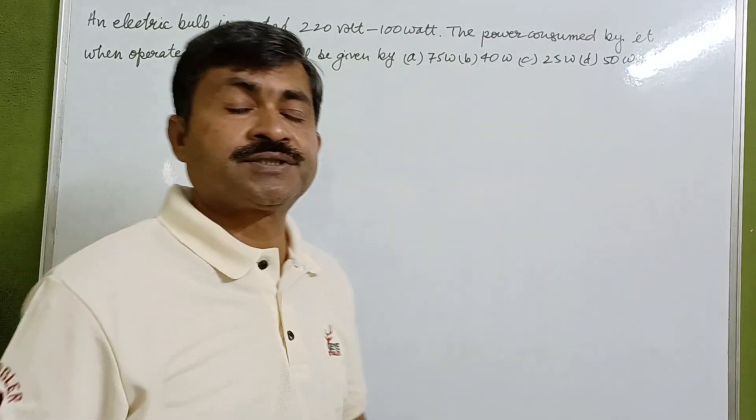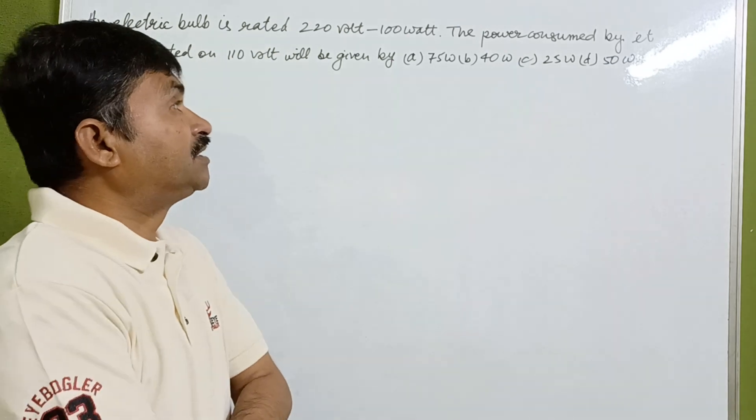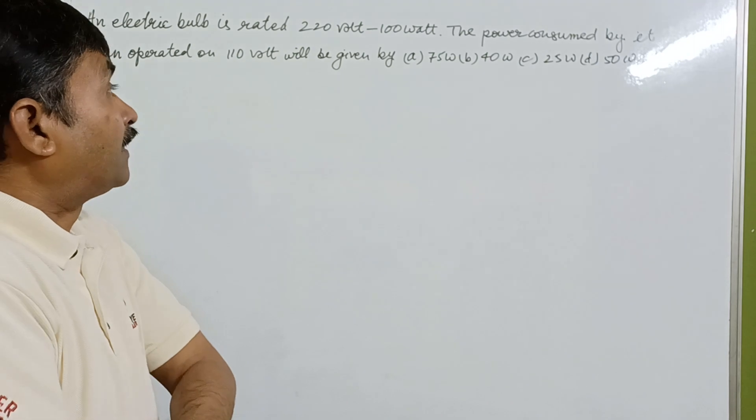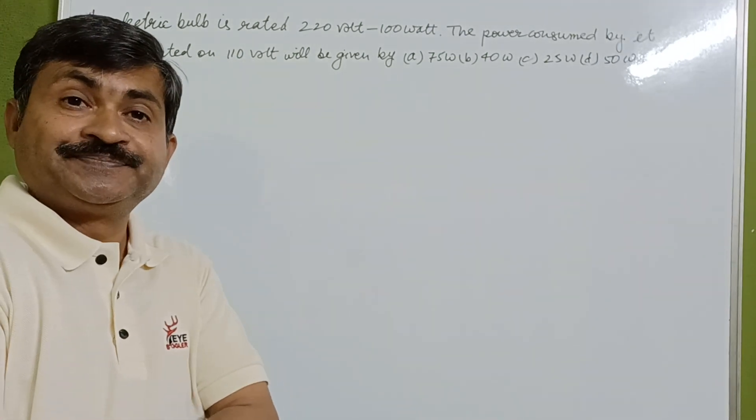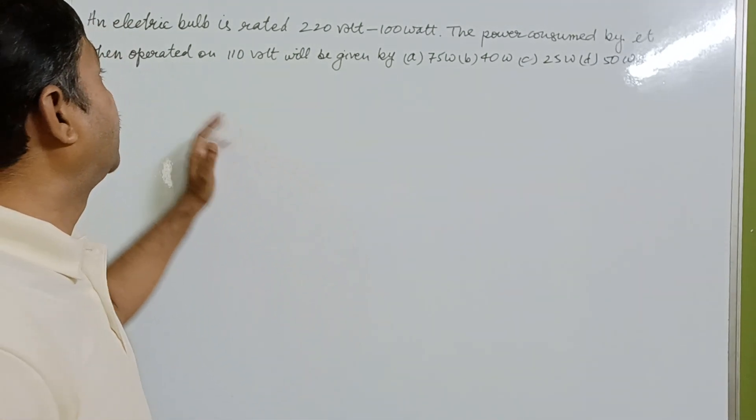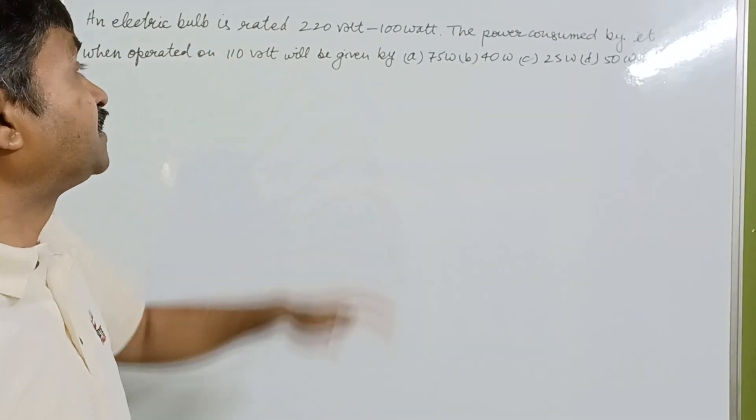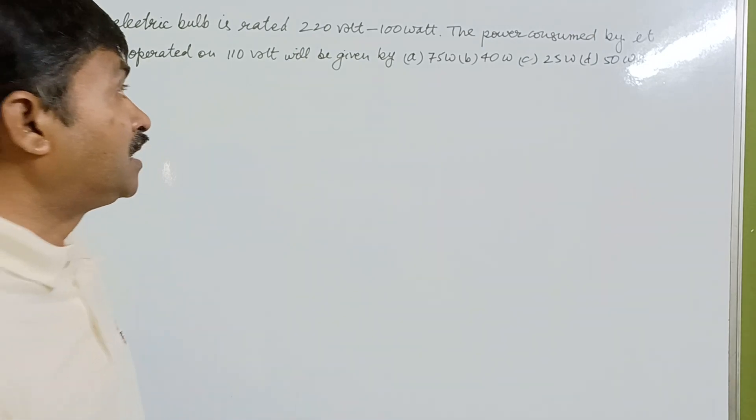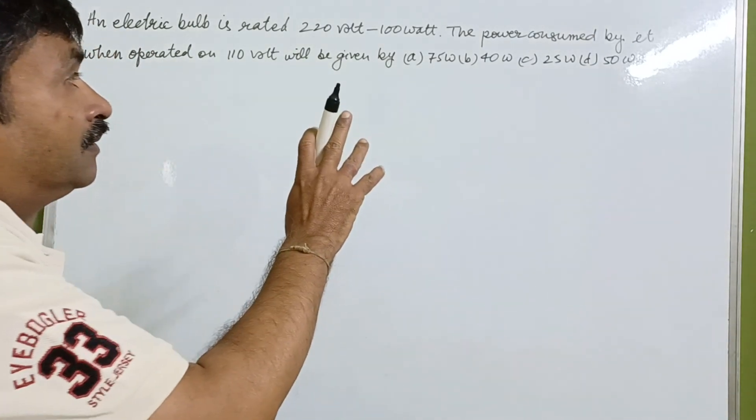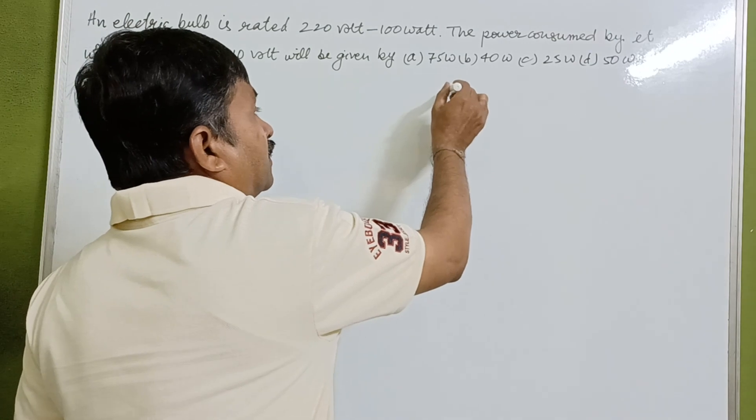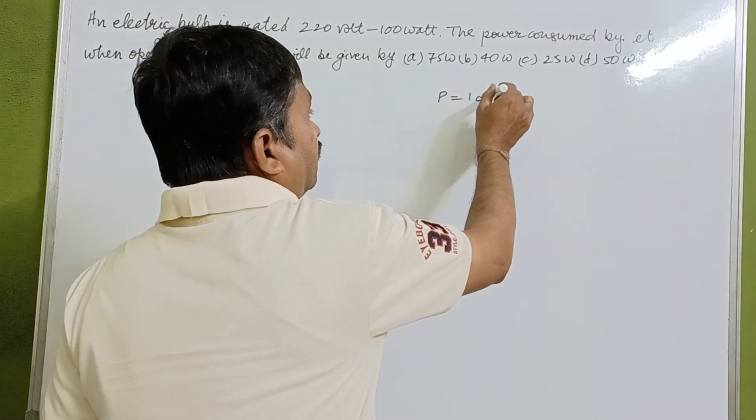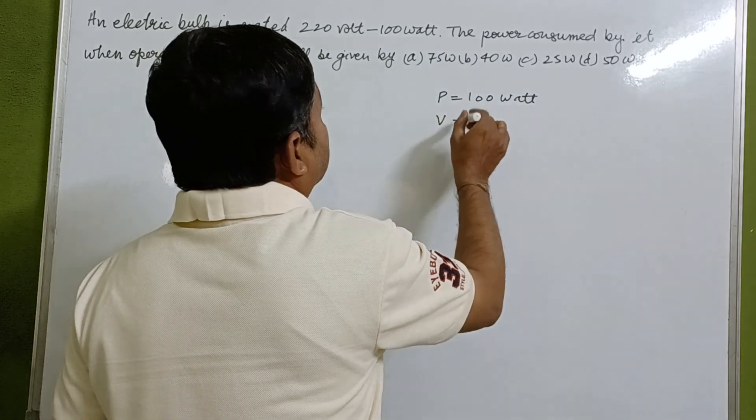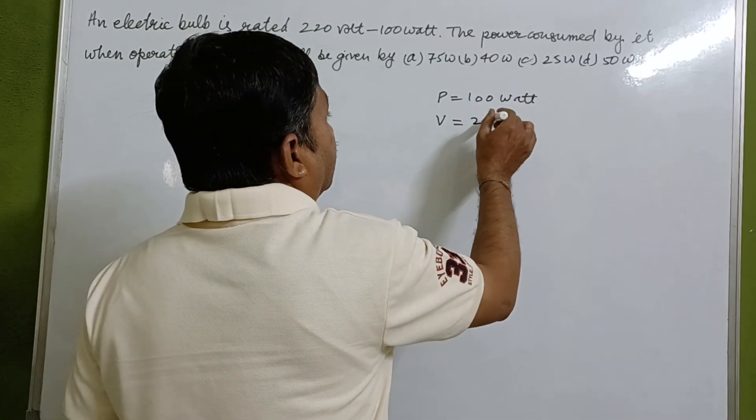Yes, dear students, today we will see a numerical problem based on power consumption in the current electricity chapter. An electric bulb is rated 220 volt, 100 watt, meaning the power consumption is 100 watt when operating at 220 volt.